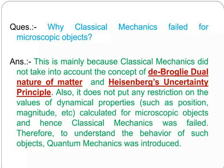Why classical mechanics failed for microscopic objects? This is mainly because classical mechanics did not take into account the concept of de Broglie dual nature of matter and Heisenberg uncertainty. Also, it does not put any restrictions on the value of dynamic properties such as position and magnitude calculated for microscopic objects, and hence classical mechanics failed. Therefore, to understand the behavior of such objects, quantum mechanics was introduced.